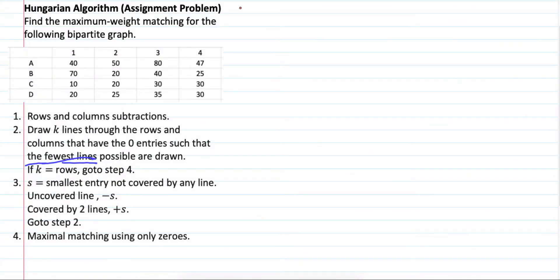Let's solve this problem. So, first, row reduction. A, B, C, D. Then, we have 4 columns. So, the smallest one is 40. 40 minus 40 is 0. 50 minus 40 is 10. 80 minus 40 is 40. And then, 47 minus 40 is 7. We minus 40 here.